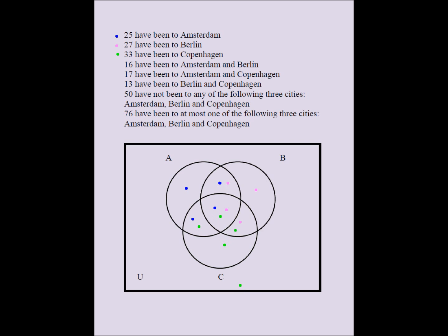Now this is very important to keep straight. If the question had said 25 have been to only Amsterdam, that 25 would go only in the Amsterdam-exclusive region. If the question said 27 have been to only Berlin, then 27 would go only in the Berlin-exclusive region. But the word 'only' is not there, so we have to keep that straight.